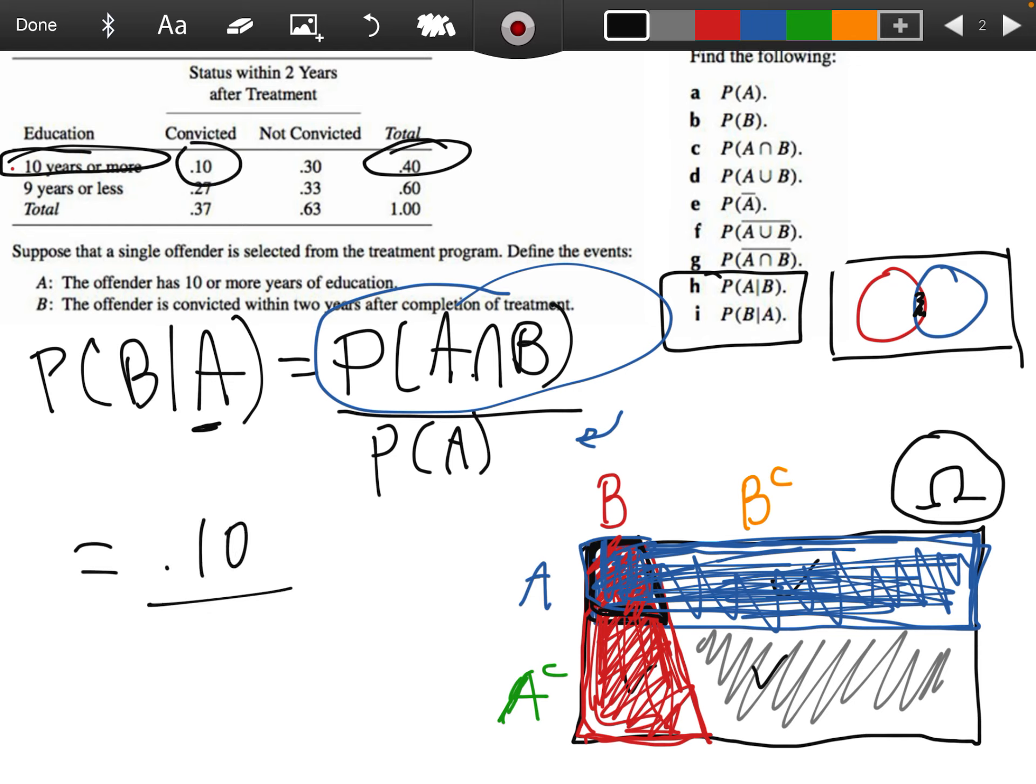So the numerator, again, is the 0.10, same as before, but this time, what's the denominator? It's just the 0.40. So, one quarter or 0.25, and that's it.